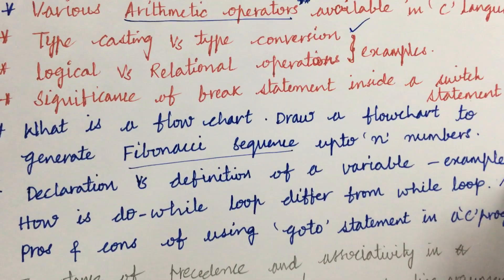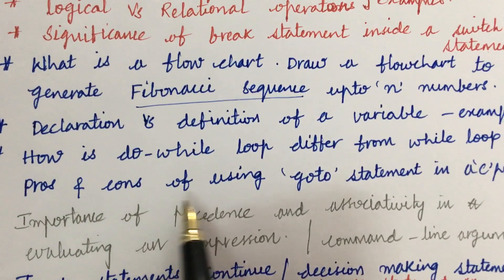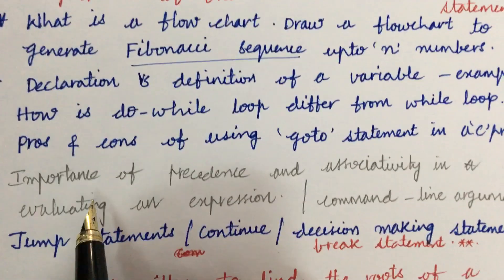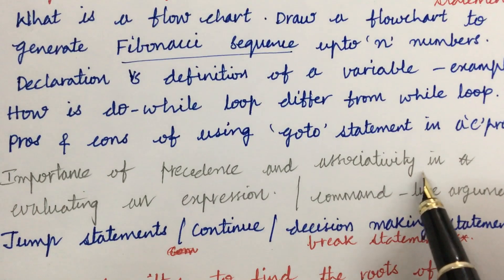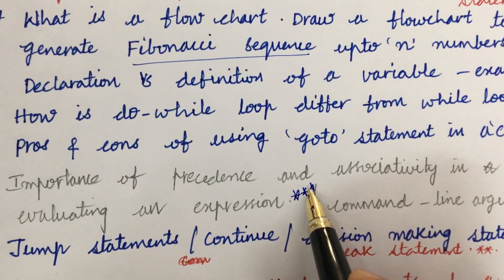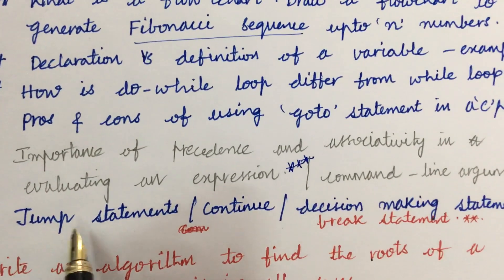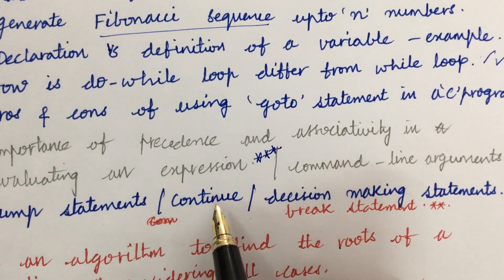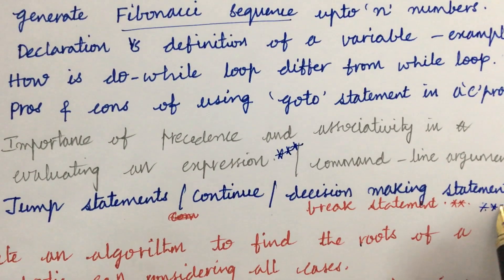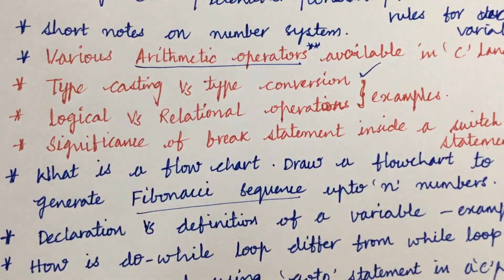Define the pros and cons of using goto statement in a C program and the importance of precedence and associativity in evaluating an expression - said to be very important and a gunshot question. Command line arguments, jump statements, continue as well as decision making statements along with break statements is very important. If it is a Part A and Part B, students will be covering short questions as well as long questions.